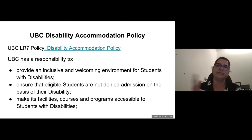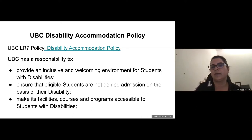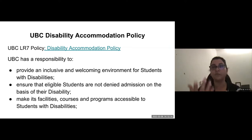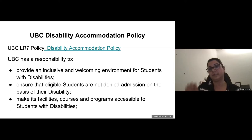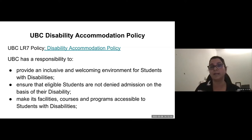Considering how accessibility works at UBC, I'd like to bring your attention to the UBC disability accommodation policy, called LR7. It has different guidelines for individual disabled students, as well as instructors, and outlines overall UBC responsibility — which includes providing an inclusive and welcoming environment for students with a disability, ensuring eligible students are not denied admission based on their disability, and making all facilities, courses, and programs accessible. This is something we don't always pay attention to when offering courses — whether they are fully accessible to students using assistive technology.